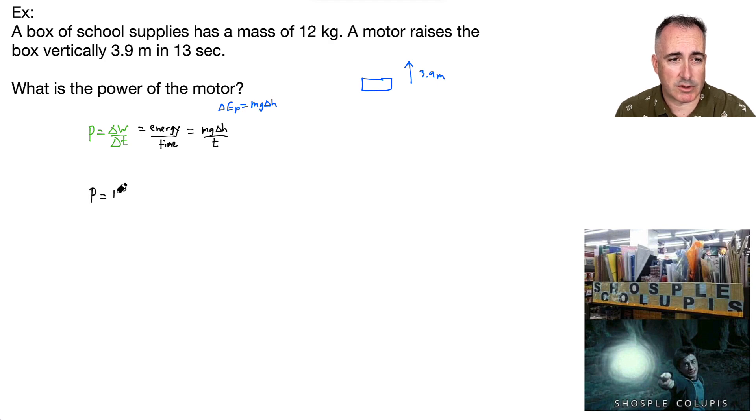So let's see here. We have M, which is 12 kilograms. We have G, which is 9.81 meters per second squared. We have delta H change in height, which is 3.9 meters. And we divide all that by 13 seconds.